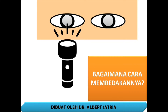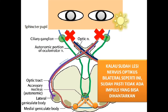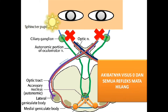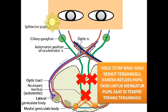Bagaimana cara membedakannya? Kalau sudah lesi nervus optikus bilateral, sudah pasti tidak ada impuls yang dihantarkan, akibatnya visus nol dan semua refleks mata hilang. Bila lesi pada seluruh nukleus oculomotorius atau serabut oculomotorius bilateral, visus dapat tetap baik atau sedikit terganggu, karena refleks pupil yang mengatur pupil saat di tempat terang terganggu.